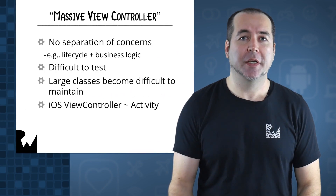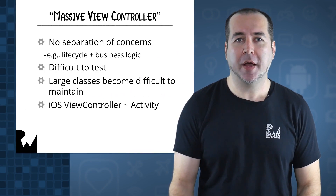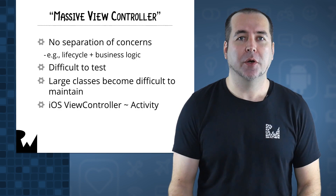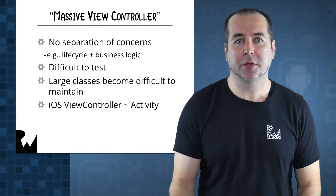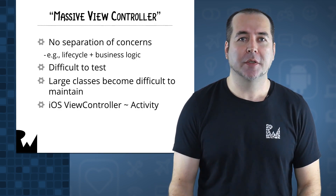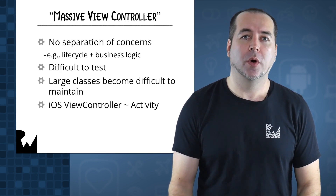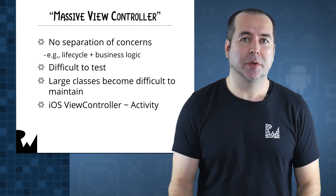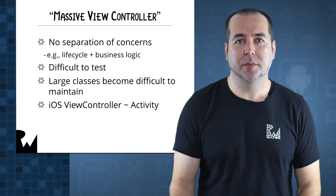But having the bulk of your code in activities and fragments is problematic for many reasons. The code does not follow the principle of separation of concerns, which recommends that each class stay focused on a small number of separate responsibilities. For example, one main responsibility of activity classes is responding to lifecycle events from the operating system.